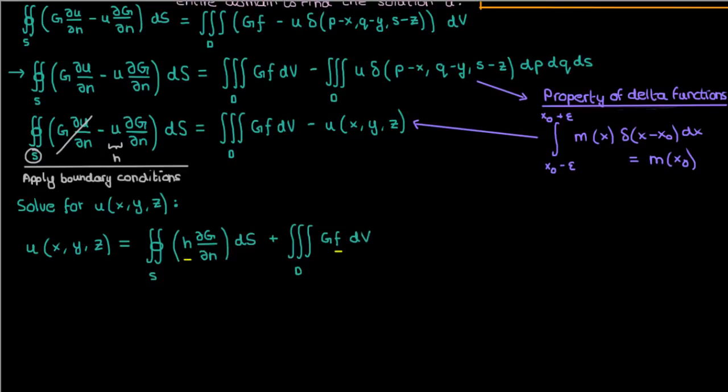We know f and h from the original PDE we were trying to solve, and we know capital G because we can easily, or at least somewhat easily, solve the subproblem of the PDE for the delta function input. So if we plug our known f, h, and eventually capital G into this formula, we end up with the solution to the PDE u in terms of these integrals.